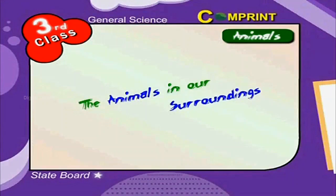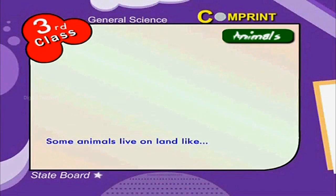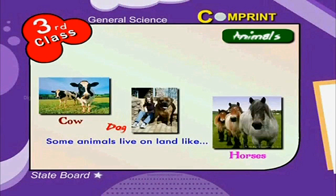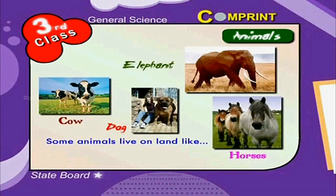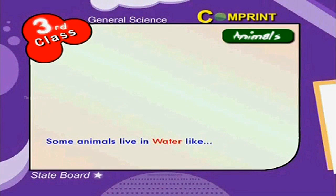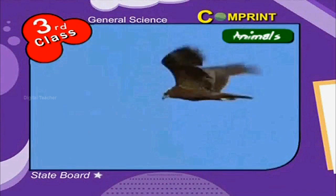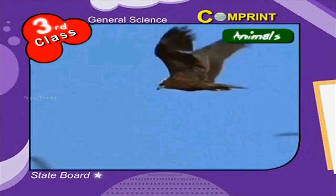The animals in our surroundings. Some animals live on land like cows, dogs, horses and elephants. Some animals live in water like fish, crocodile and whale. Birds fly in the air.